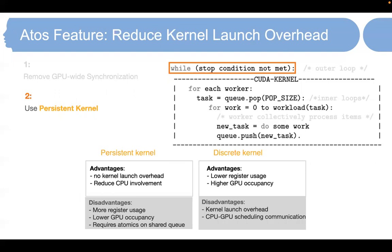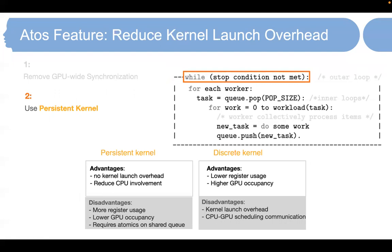Our second step is to reduce kernel launch overhead. This is done by using a persistent kernel to move the scheduling from the CPU side onto the GPU side. The advantages include reducing kernel launch overhead and CPU involvement. However, persistent kernel has higher register usage than discrete kernel, therefore lower GPU occupancy, and it requires atomic operations on the shared queue data structure. The advantage of discrete kernel is its simplicity and lower register usage, but it has higher kernel launch overhead if the kernel is small and that overhead cannot be amortized.